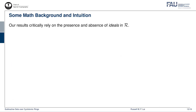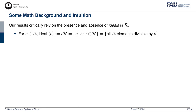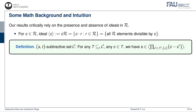Before going to the technical details, let me lay down some mathematical background and intuition. The results in this paper critically rely on the presence and absence of ideals in the ring R. For a ring element C, the ideal generated by C, written as bracket C, is the set of all ring elements which can be written as a product between C and another ring element — in other words, the set of all ring elements divisible by C. Using the language of ideals, the definition of S_t-subtractive sets can be rewritten as: a set C is S_t-subtractive if for any T-subset T of C and any element C in T, the slack S belongs to the ideal generated by the product of differences between C and C' for all C' in T different from C.